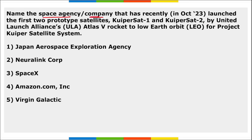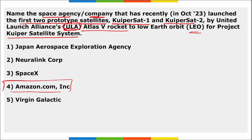Amazon.com Incorporated recently launched the first two prototype satellites — KuiperSat-1 and KuiperSat-2 — via ULA Atlas 5 rocket to low earth orbit for the Project Kuiper satellite internet system.